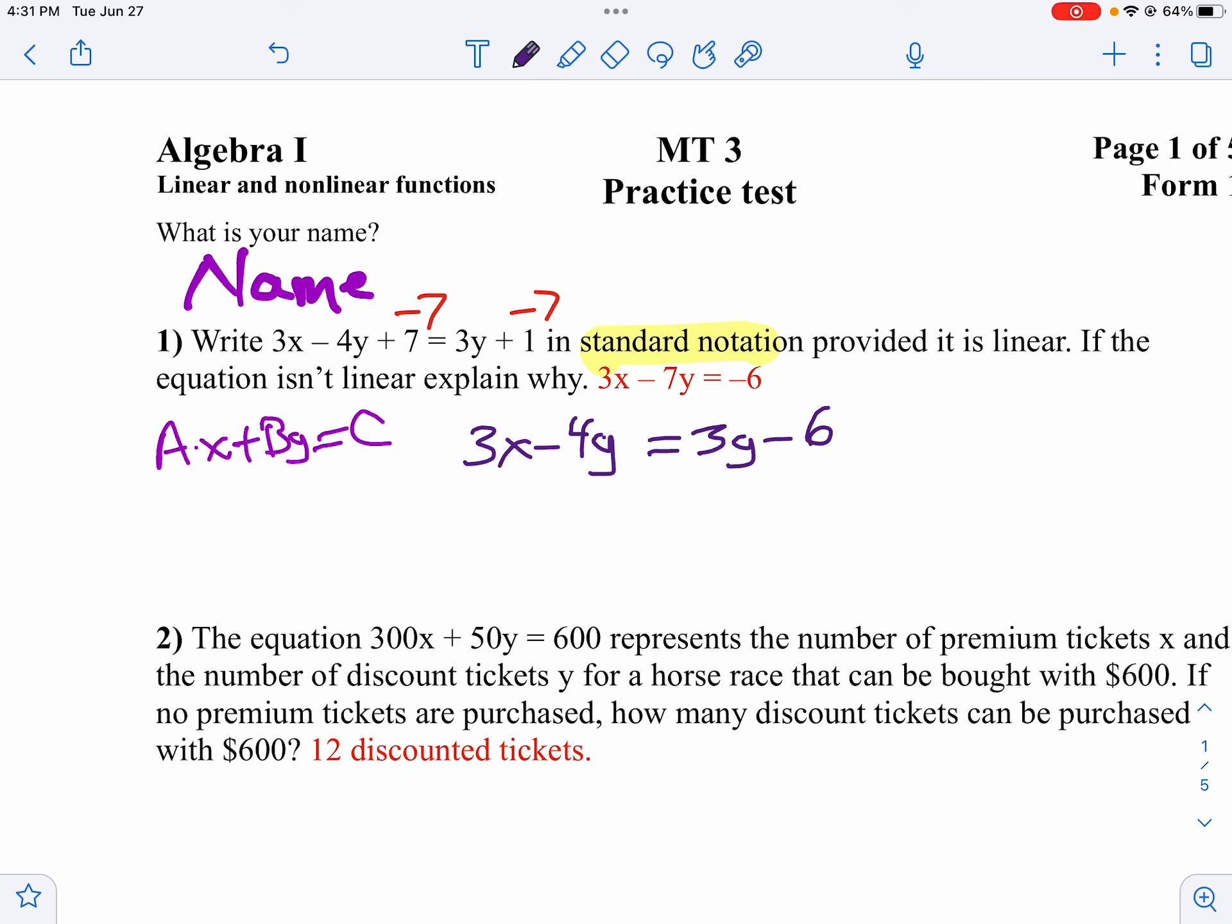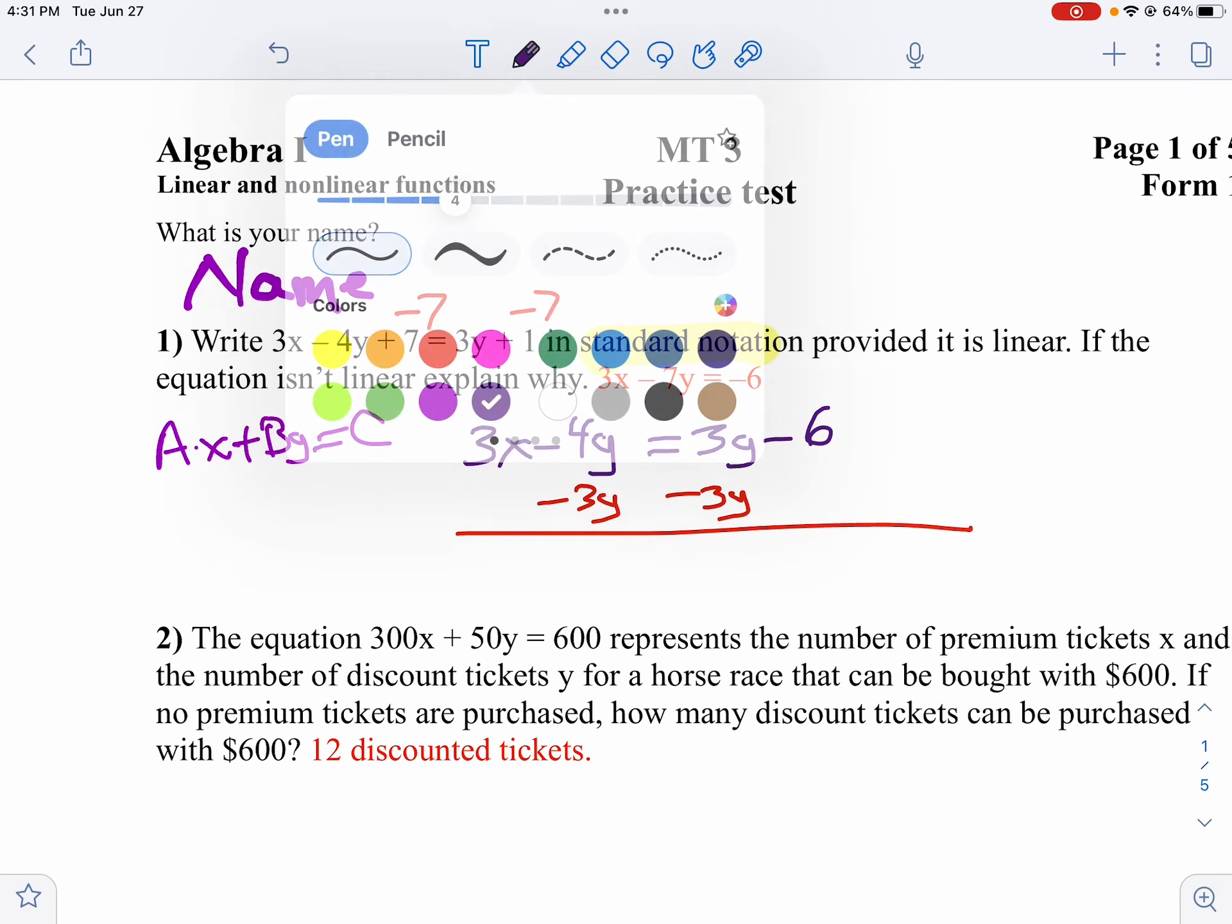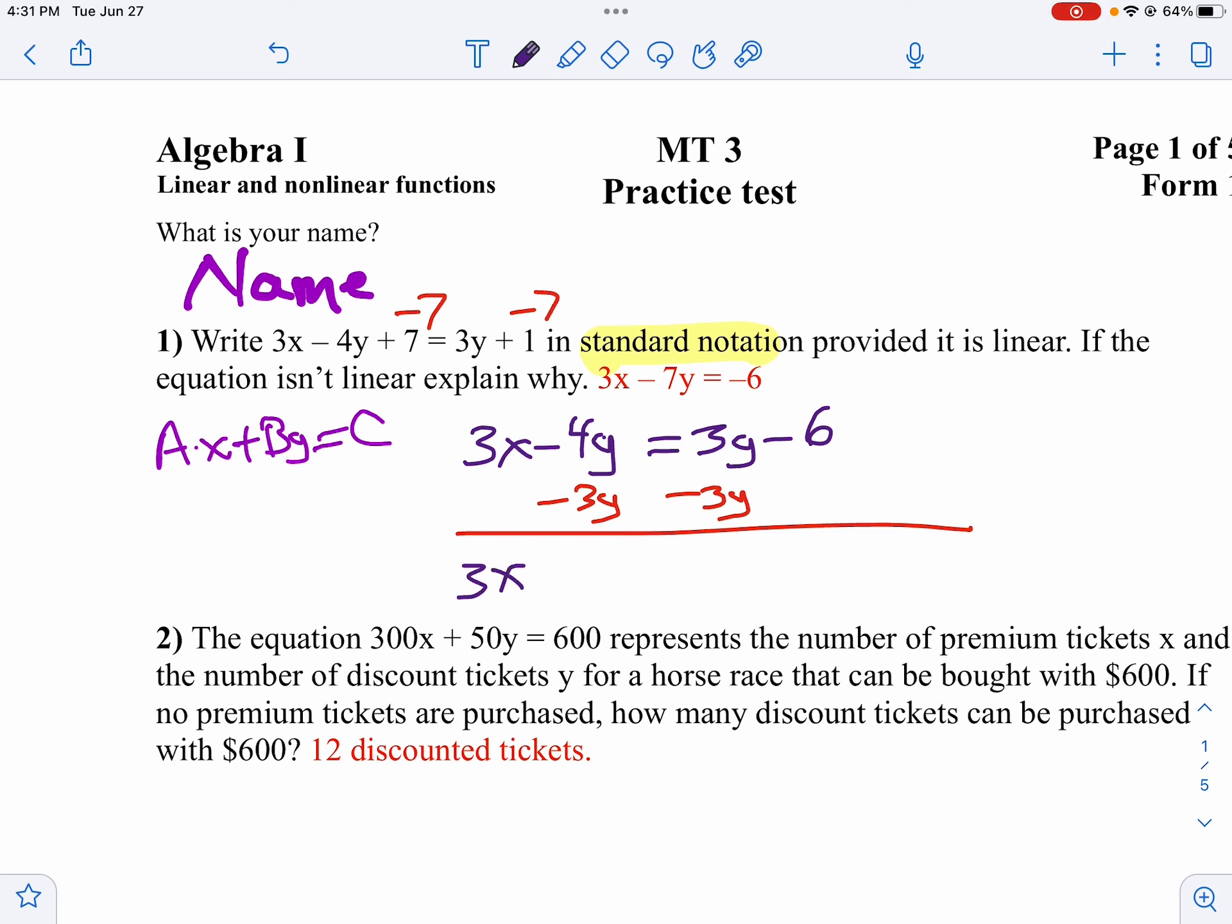So then we'll get 3X minus 4Y equals 3Y minus 6. And then let's subtract 3Y from both sides. And we'll get 3X minus 7Y equals negative 6. This equation is in standard form. It's a linear equation because there's nothing weird in it. No exponents, no absolute values or anything like that.